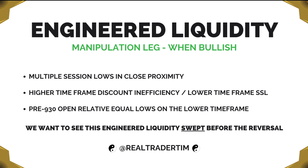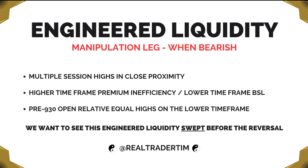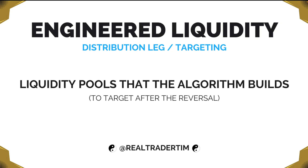During the bullish manipulation leg, we want to see multiple session lows in close proximity, higher time frame discount inefficiencies in close proximity to lower time frame sell-side liquidity pools, and pre-9:30 open relative equal lows. On the bearish manipulation leg, we want to see multiple session highs in close proximity, higher time frame premium inefficiencies close to lower time frame buy-side liquidity pools, and pre-9:30 open relative equal highs on the lower time frame.